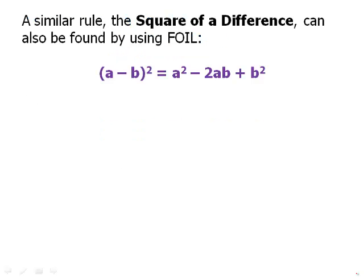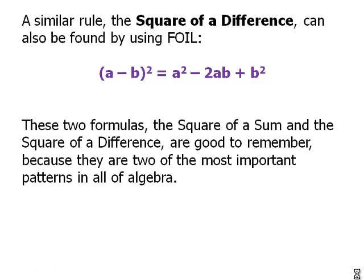A similar rule, the square of a difference can also be found by FOILing. This is (a - b)² = a² - 2ab + b². These two formulas, the square of a sum and the square of a difference are good to remember because they are two of the most important patterns in all of algebra.